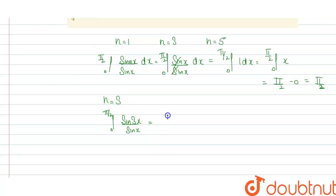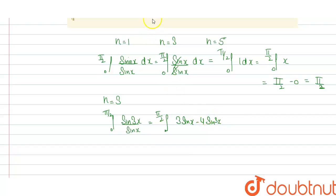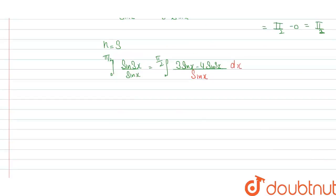sin(3x) can be written as 3sin(x) minus 4sin³(x). So the integrand sin(3x)/sin(x) becomes (3sin(x) - 4sin³(x))/sin(x), which simplifies to 3 - 4sin²(x).